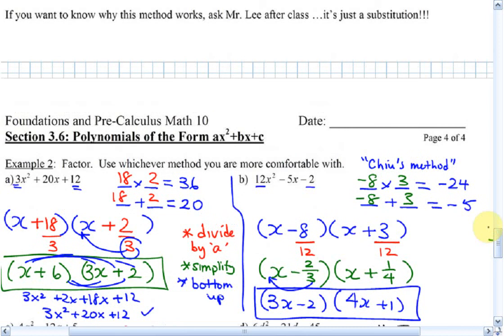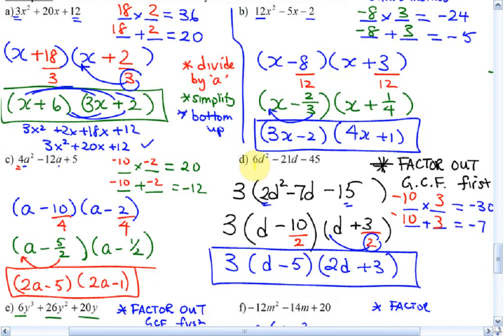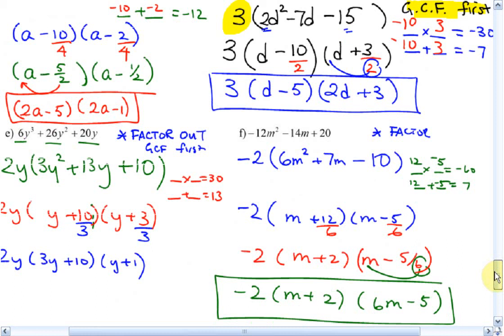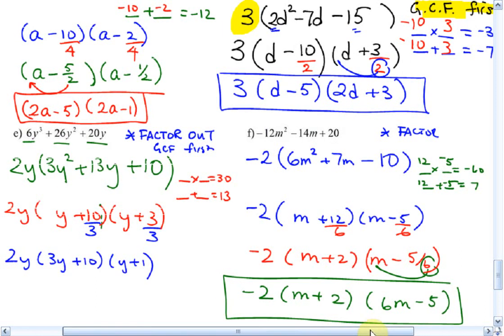Here are the answers to 2A and 2B — pause the video to take a look and copy this down. Here are the answers to C and D. Notice for D, you need to factor out the GCF first — always take out the GCF first. Then here's E and F. Once again, there are GCFs for these ones, so make sure you take them out first and then factor what's remaining.